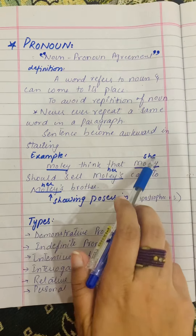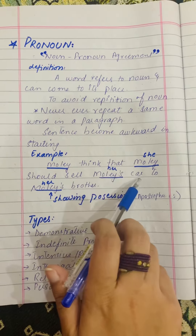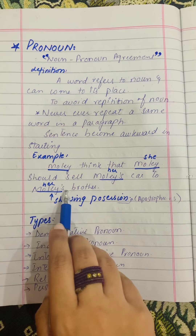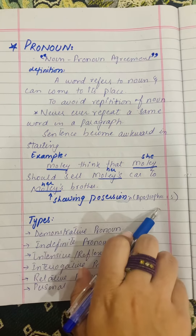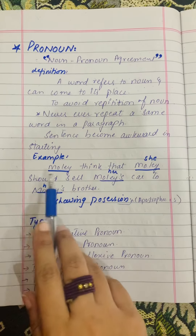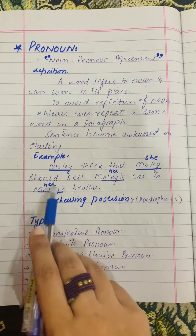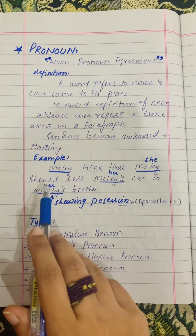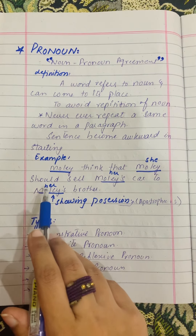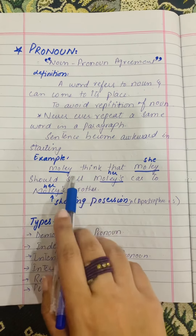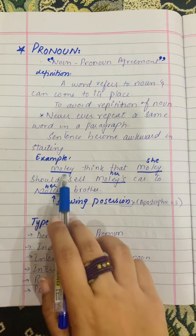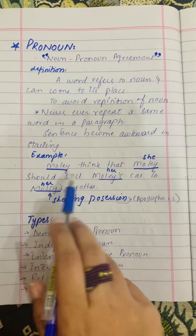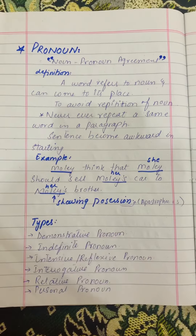We write: 'Molly thinks that she should sell her car to her brother.' Here 'her brother' shows possession. If Molly were a male, we would write 'his' and 'him': 'Molly thinks that he should sell his car to his brother.'